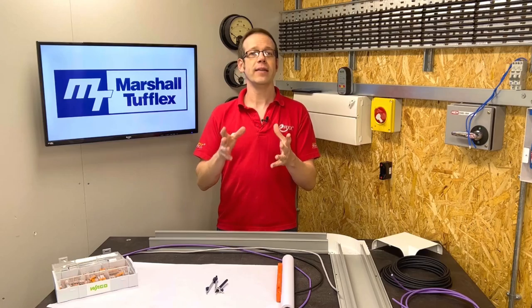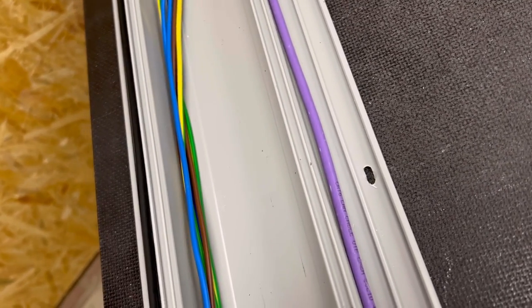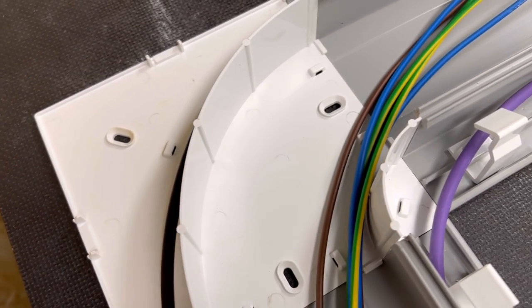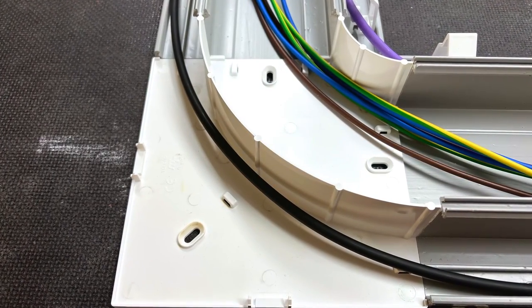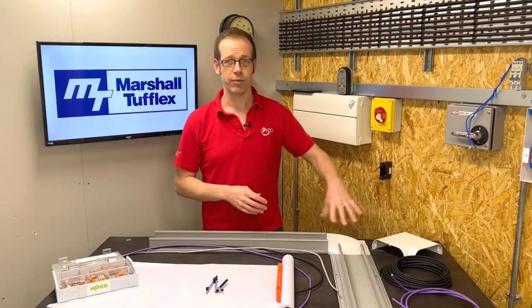The good news is that if you're running data cables through dado trunking like this Sterling Curve range from Marshall Tufflex, then the flat 90-degree bends that you might use to bring trunking down the wall and then change direction will allow you to keep the cables with nice sweeping bends that will keep you above the minimum bending radii. It will also maintain the segregation of band 1 and band 2 circuits as well through the corners.